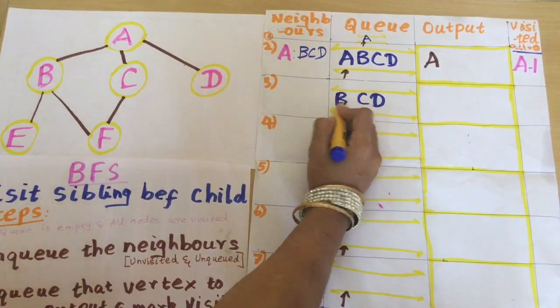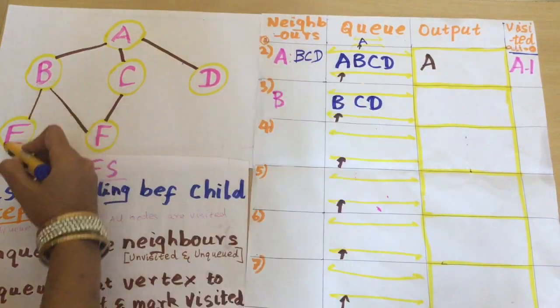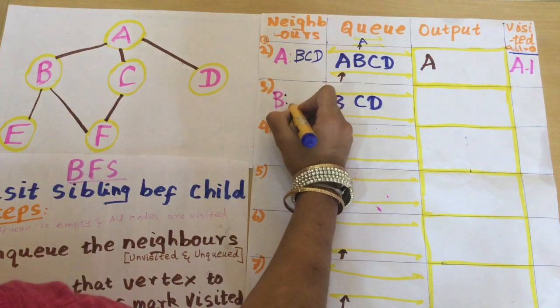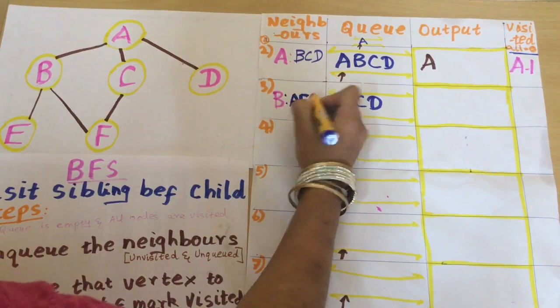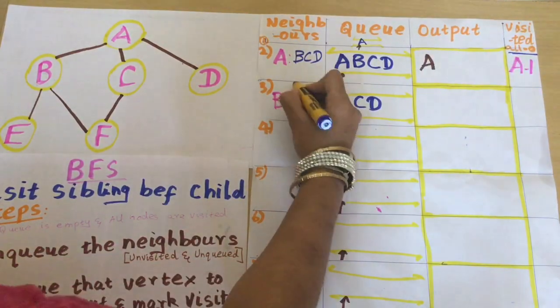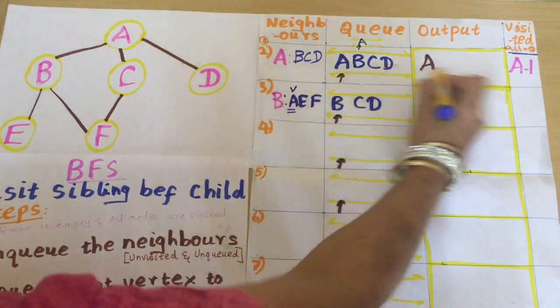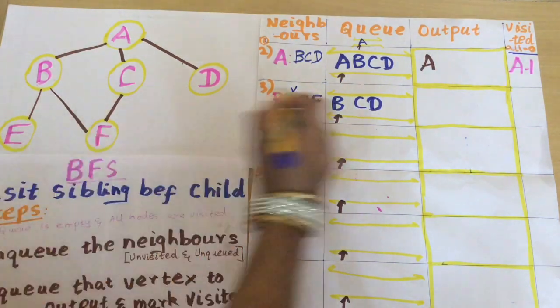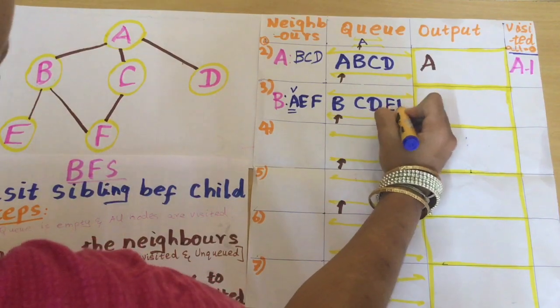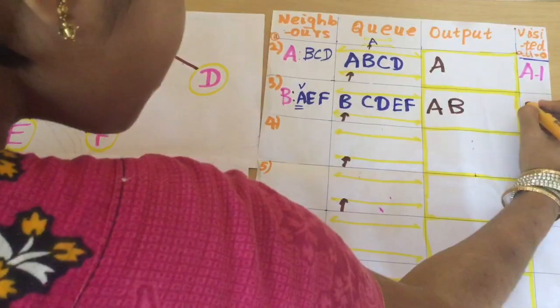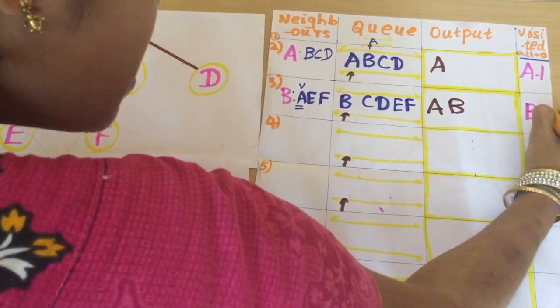Now B is in the front of the queue. The neighbors of B are A, E, and F. From the graph I see that A is visited, so I should not enqueue A. I am going to enqueue only E and F. Now I can dequeue B and mark it as visited.